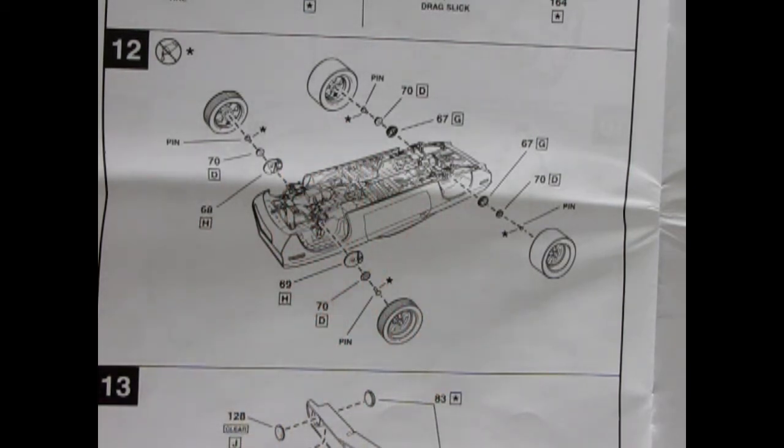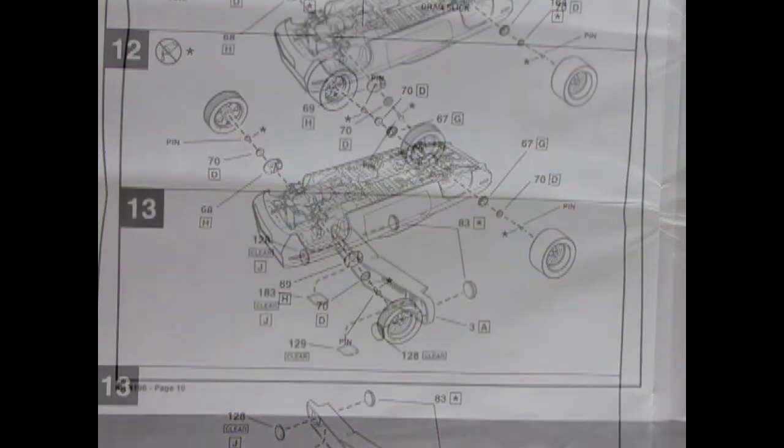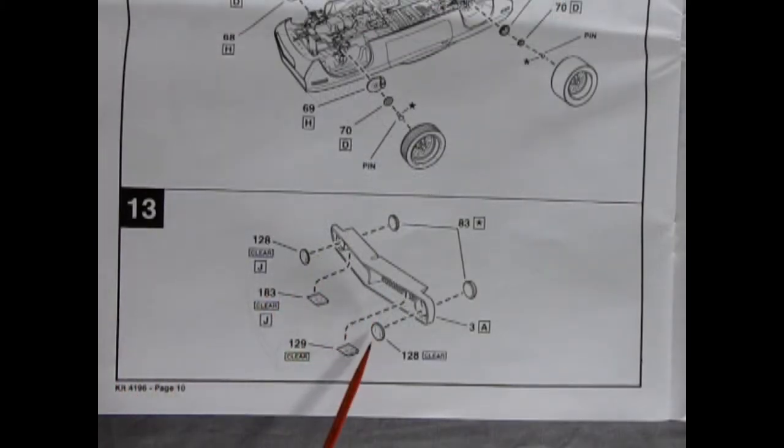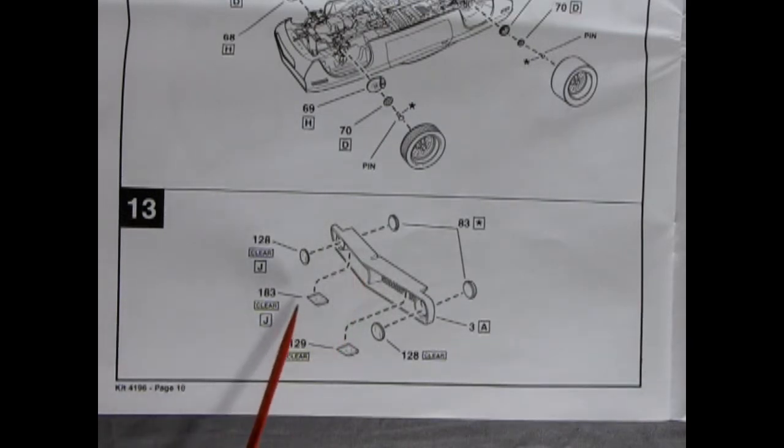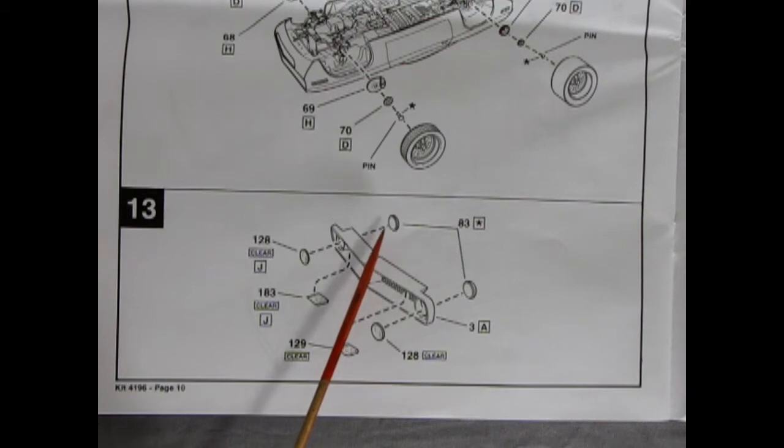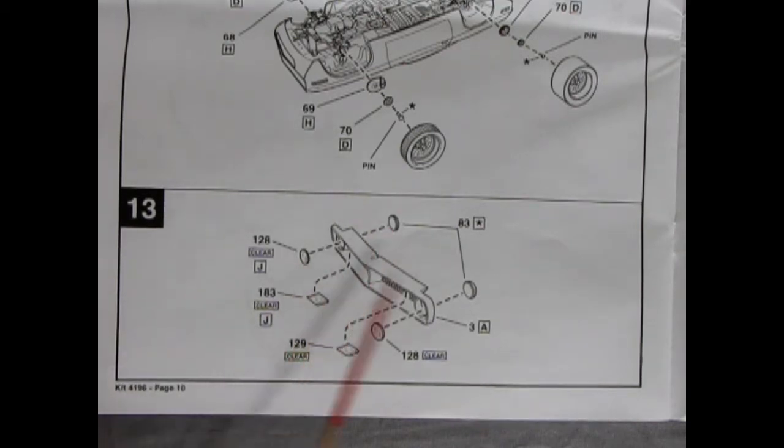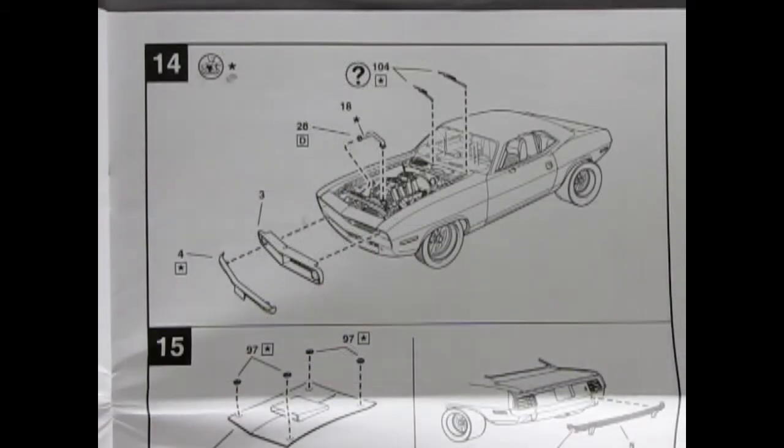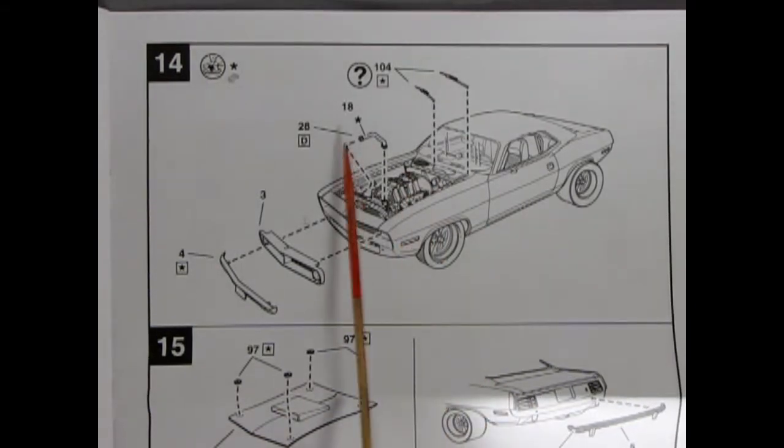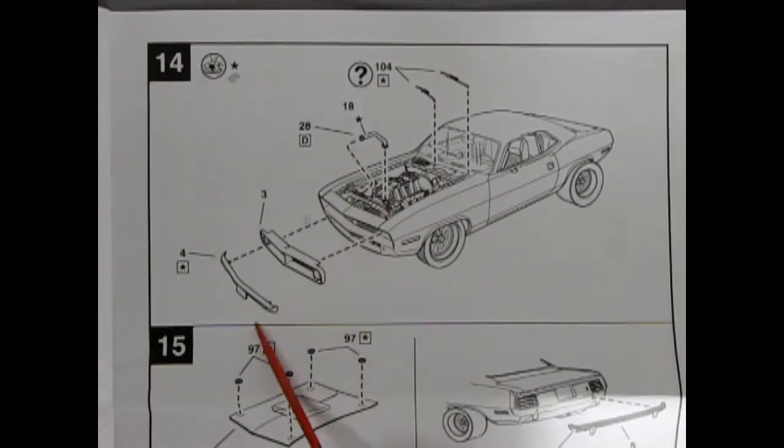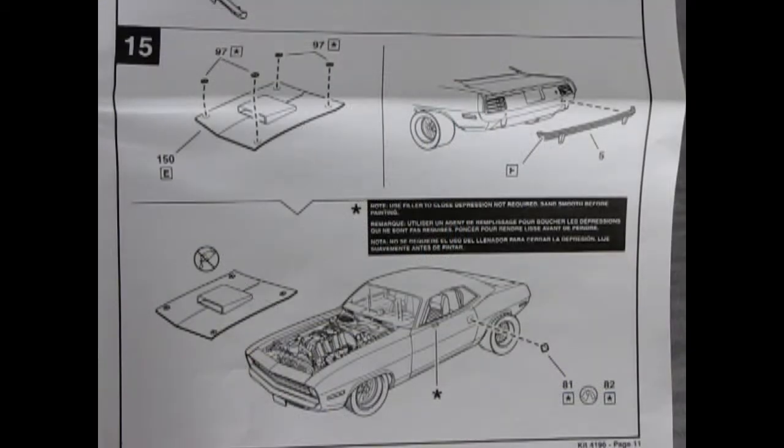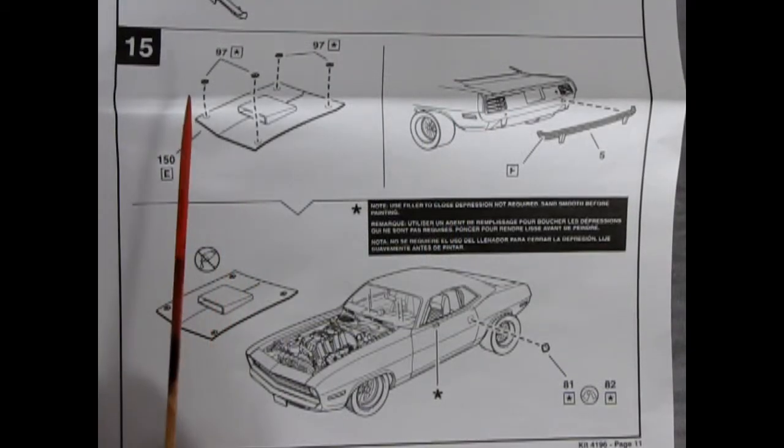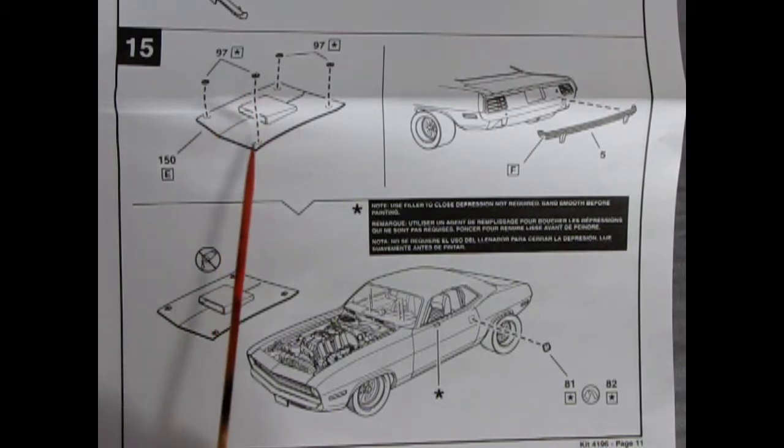Panel 13 shows our headlights going into our front grille. There are some decals in here, some clear bits, and then these would be reflectors off the back. Panel 14 shows our upper radiator hose, our grille, our front bumper going in as well as our windshield wipers. And in panel 15 we have all our hood pins going into our hood.